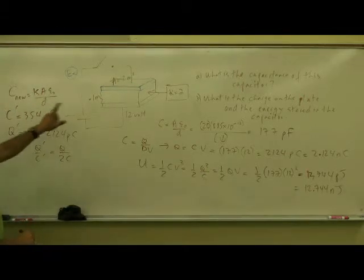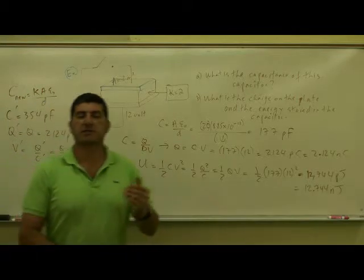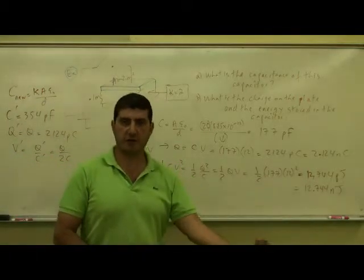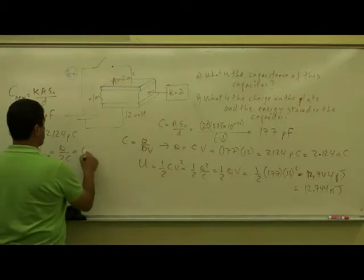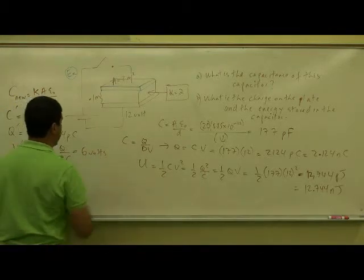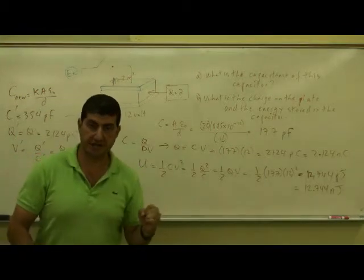C prime doubled. It was 177, became 354. So what's the voltage going to be? The voltage is going to go to half of whatever it was. So it used to be 12 volts, so it's going to be 6 volts. So the voltage across the capacitor has gone down.